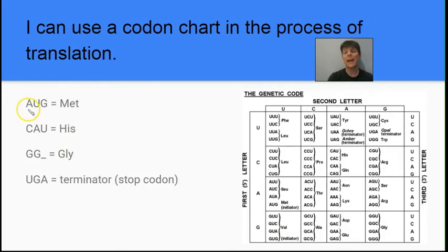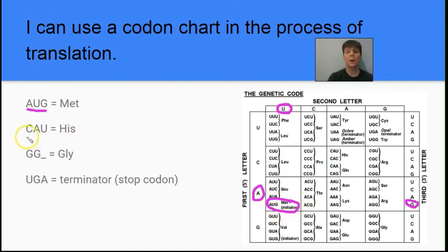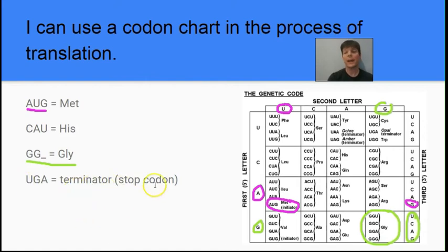Our next learning target is to understand how to use a codon chart in the process of translation. Take the codon AUG: the first base A is read on the side, the second base U is read along the top, putting us in the third row, first column, and G is at the very bottom — so AUG tells the ribosome to insert methionine (Met) into the protein chain. The codon GG, no matter what the third base is, introduces the amino acid glycine. Finally, there are terminator or stop codons — for example, UGA signals the ribosome to stop assembling amino acids, ending the amino acid chain.